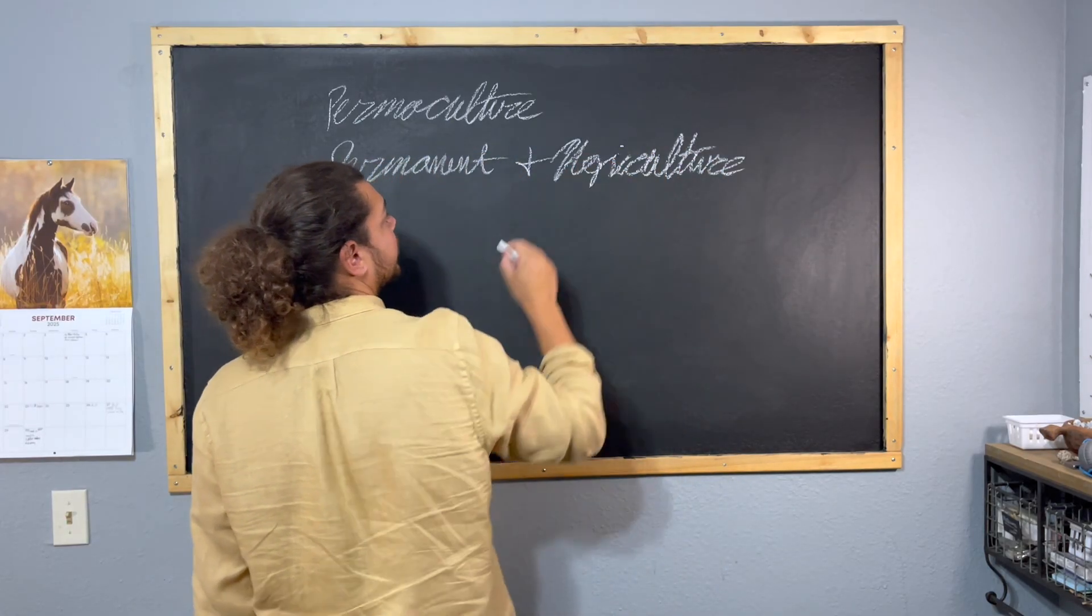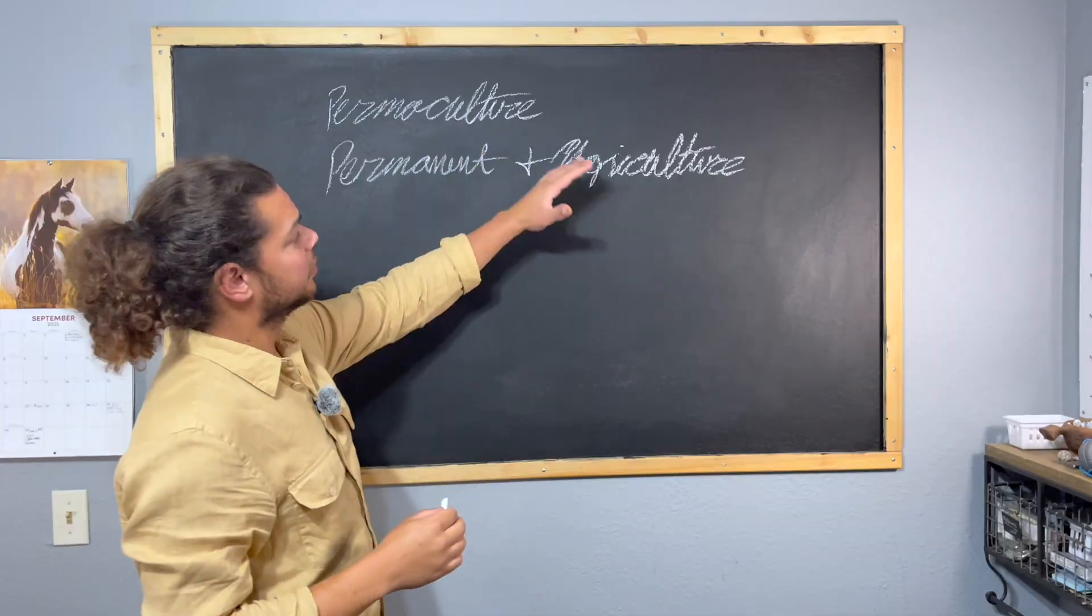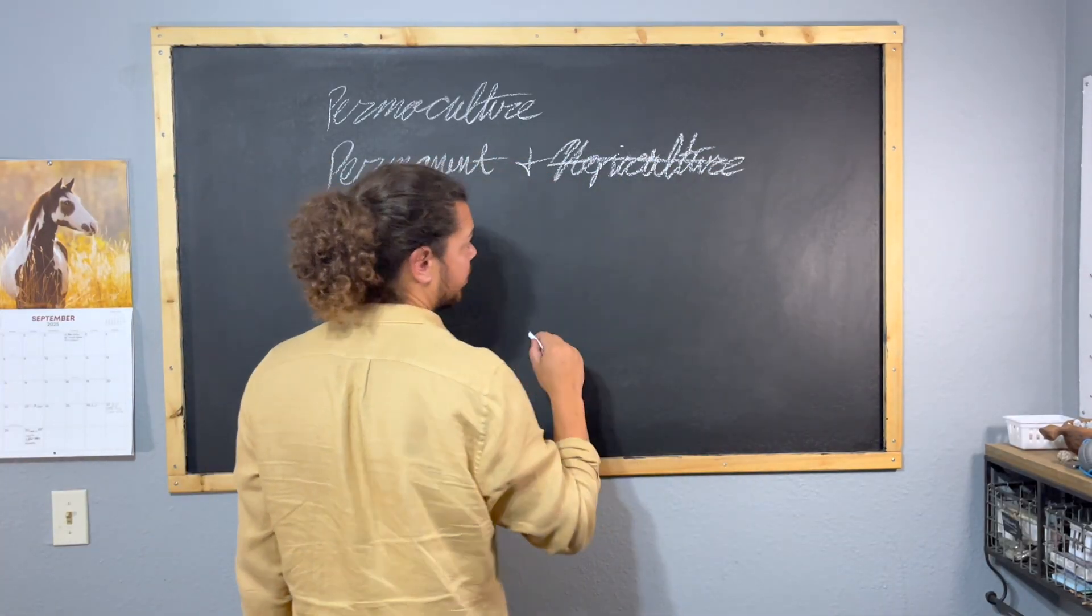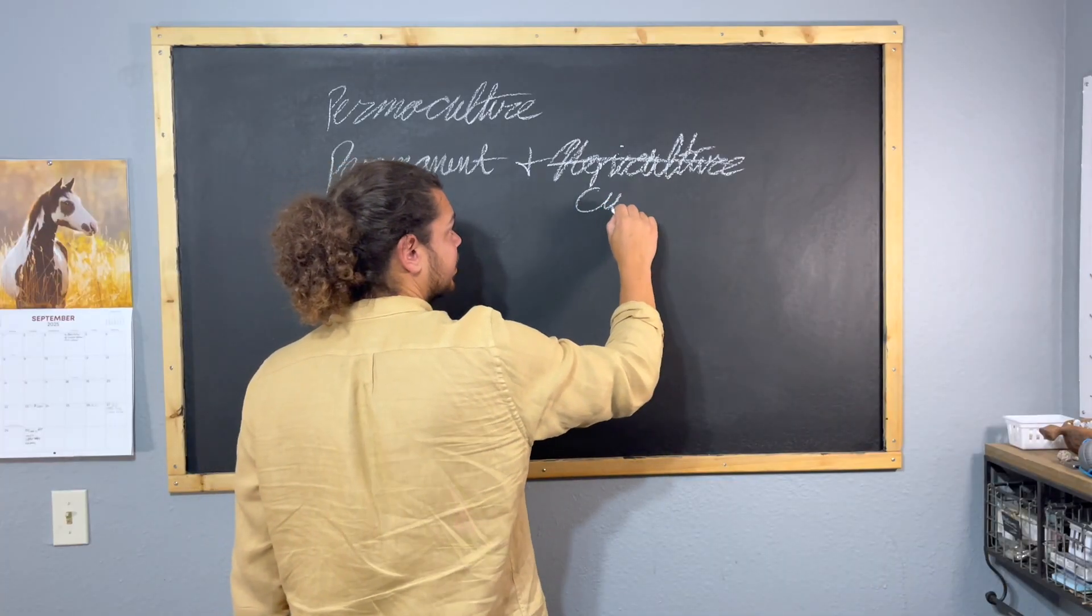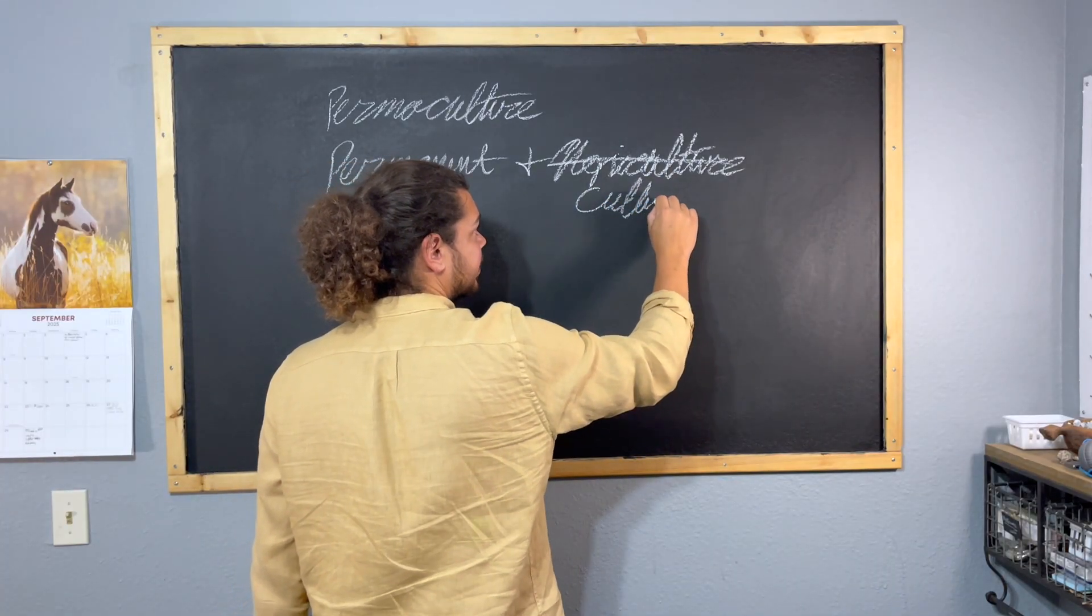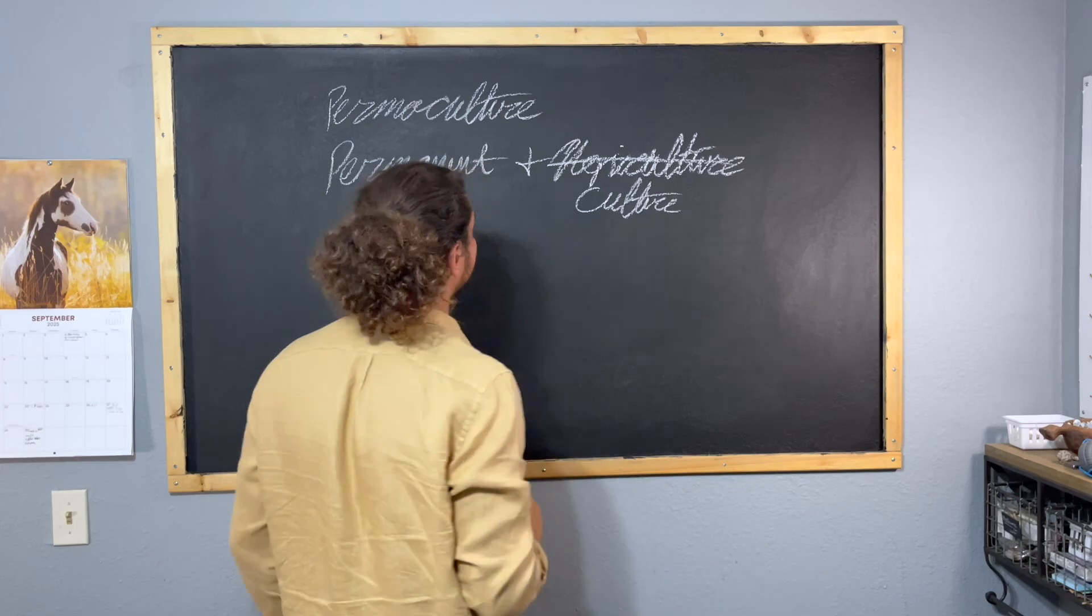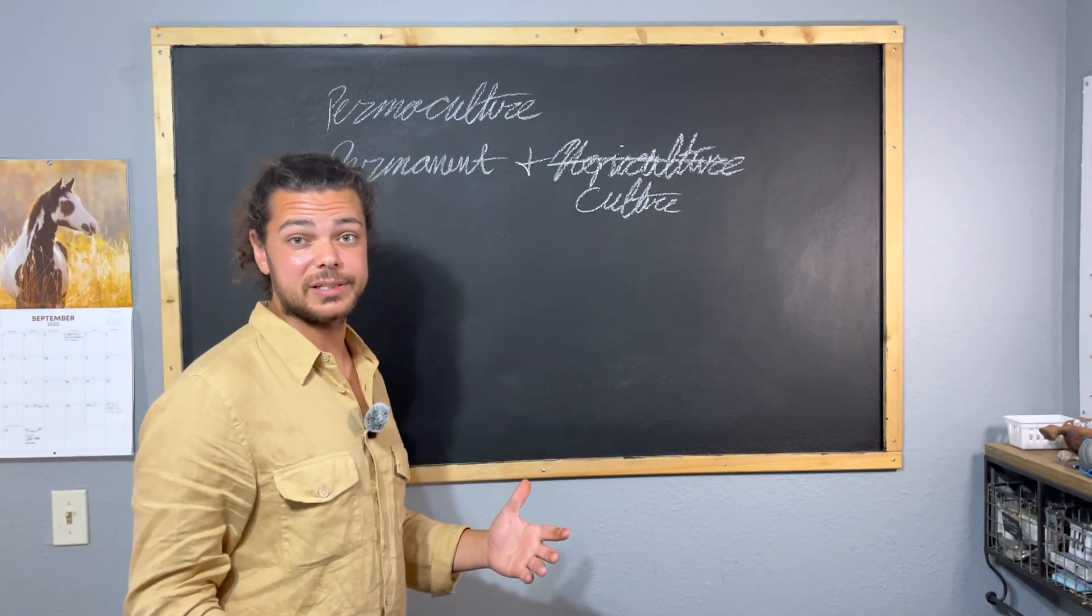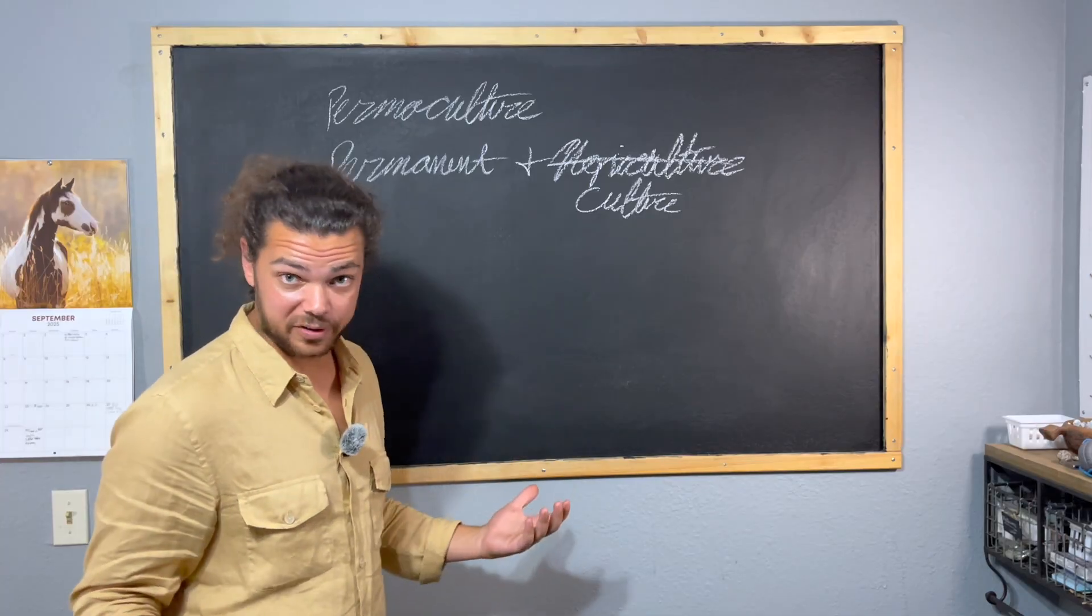But as time has gone by, as we've developed within permaculture, it's removed the agriculture part and has expanded it into a larger, encompassing culture. So it's permanent culture. That is what permaculture is. That is the end goal of permaculture.